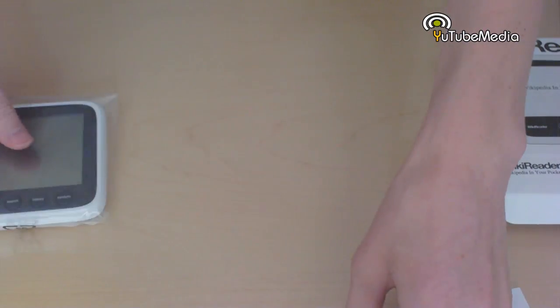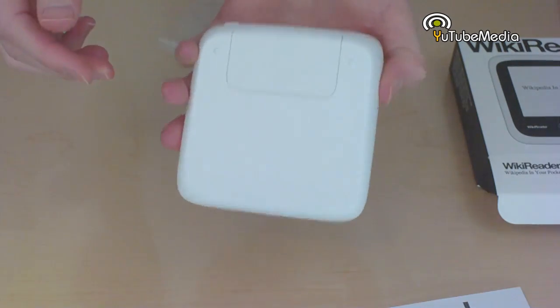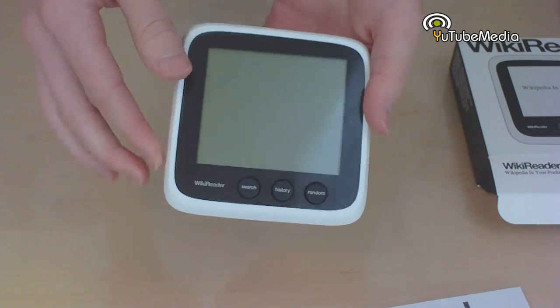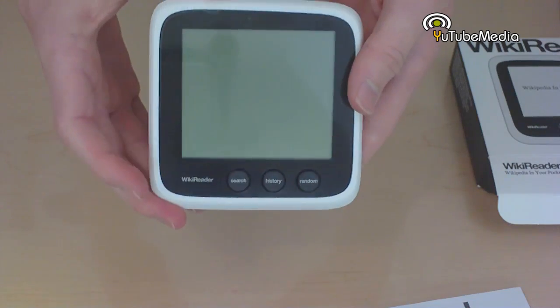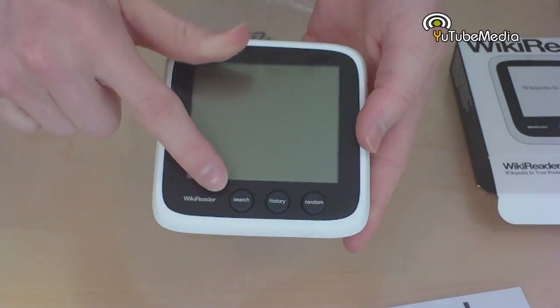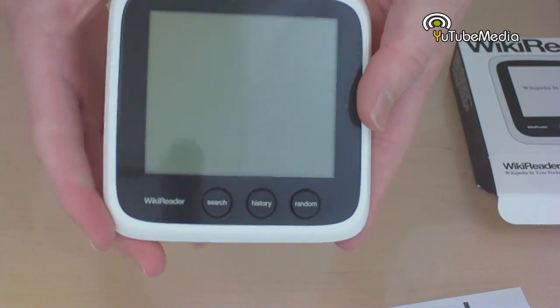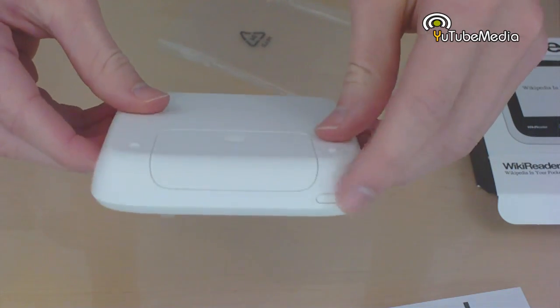Let's go ahead and get to the WikiReader. Here is the WikiReader, it's actually really light, not heavy at all. It's all white on the back end, here's the front screen with black outline. There's basically only four buttons on it. On the front there's the search, the history, and the random button. We're going to demonstrate those later. On the top we have the simple power button.